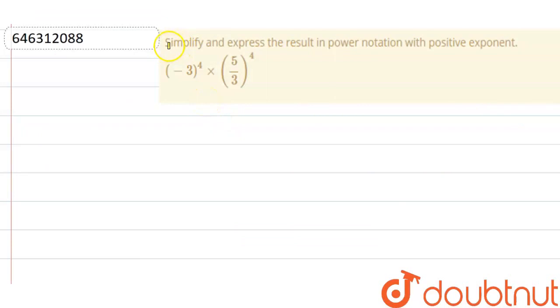Hello everyone. So our question is simplify and express the result in power notation with positive exponent: (-3)^4 × (5/3)^4.